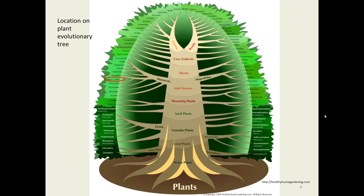Here's our evolutionary tree again. The lily allies are circled on the left in red so you can see where this group of plants lies in the plant evolutionary world. Whenever a plant taxonomic word ends in 'ales', that indicates an order. Orders are a step up taxonomically from the plant families. This picture shows how these rank against the rest of the world, with the monocots below the dicots but above water plants and ferns.